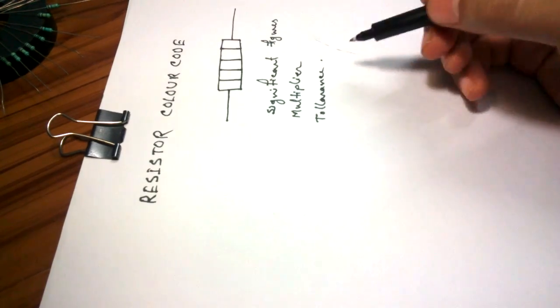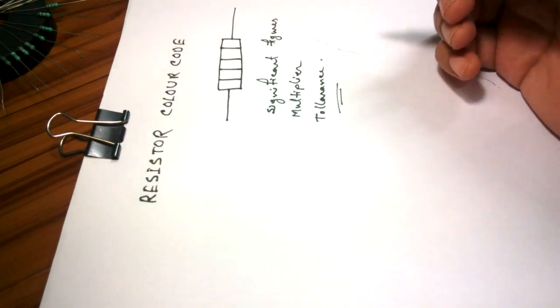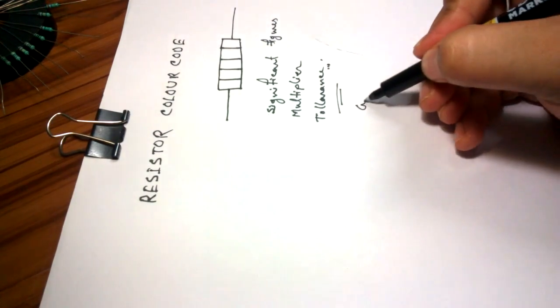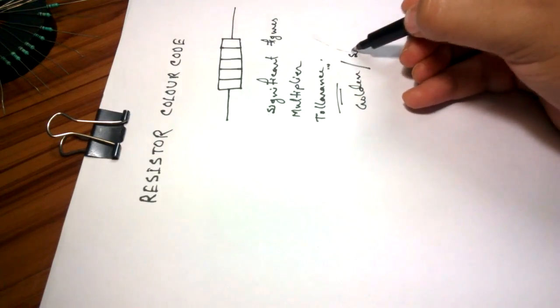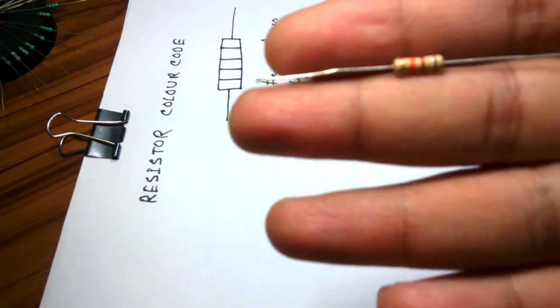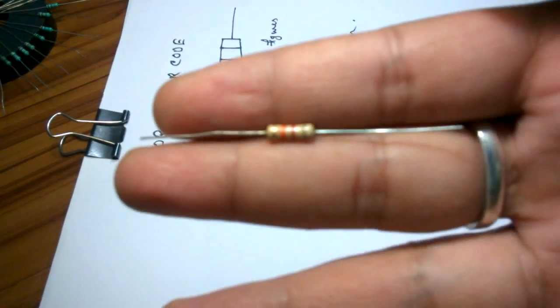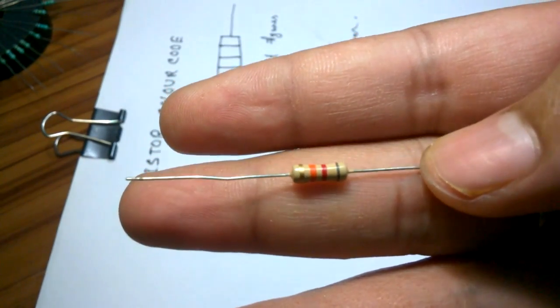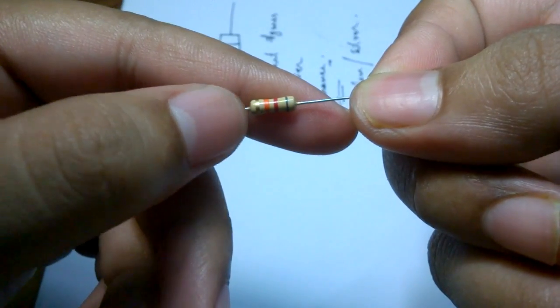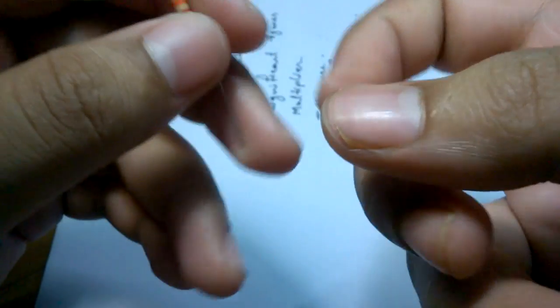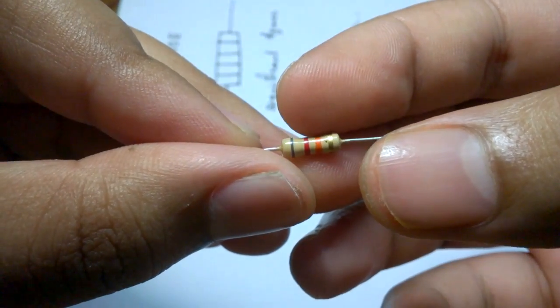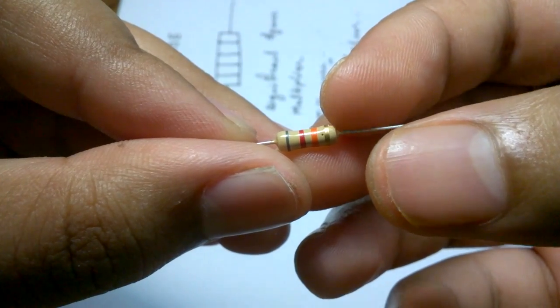First, we have to identify the tolerance. It is very easy to identify because the only color of the tolerance is either golden or silver. Can you see the golden band? There is the golden band. This is the first band, second band, third band, the last band is Tolerance.